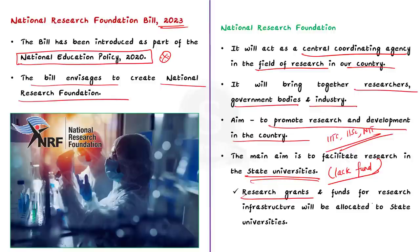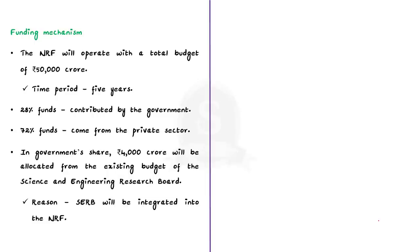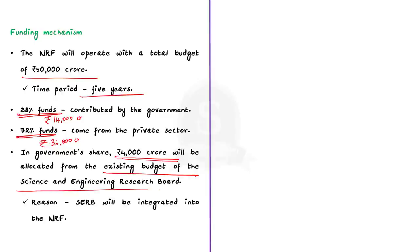The NRF will operate with a budget of 50,000 crore over five years. Out of this, 28% — that is 14,000 crore — will be contributed by the government, and the remaining 72% — that is 36,000 crore — will come from the private sector. Out of the government share, 4,000 crore will come from the existing budget of the Science and Engineering Research Board, which will now be integrated into the NRF.